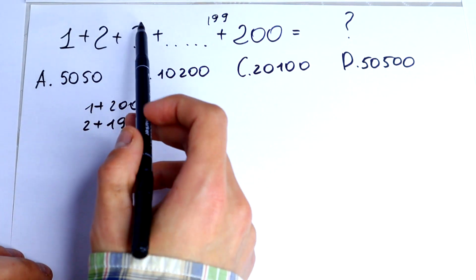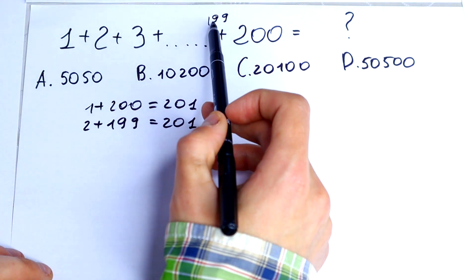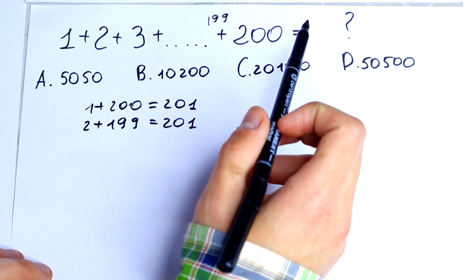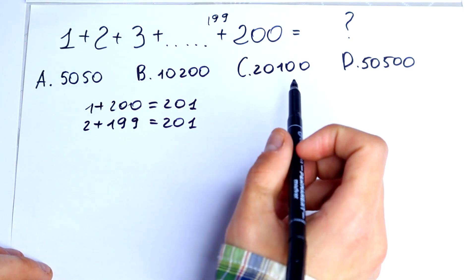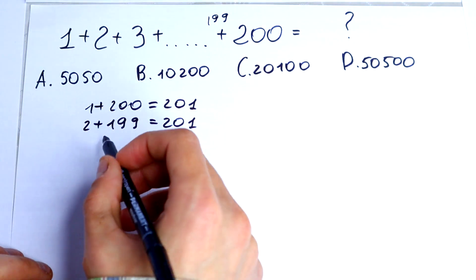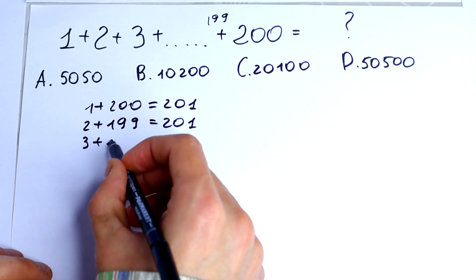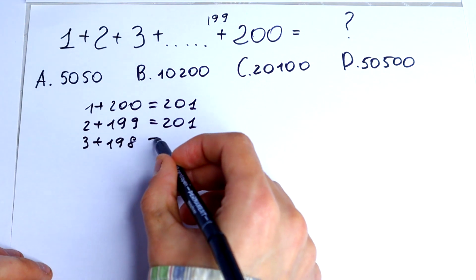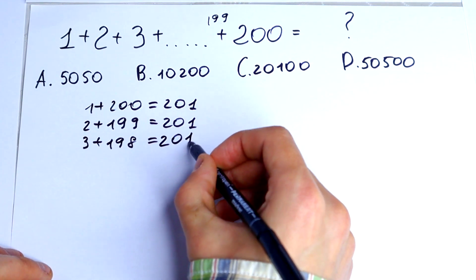Let's do the next step. 3 plus, before 199, it would be 198. 3 plus 198, it would be equal to 201.